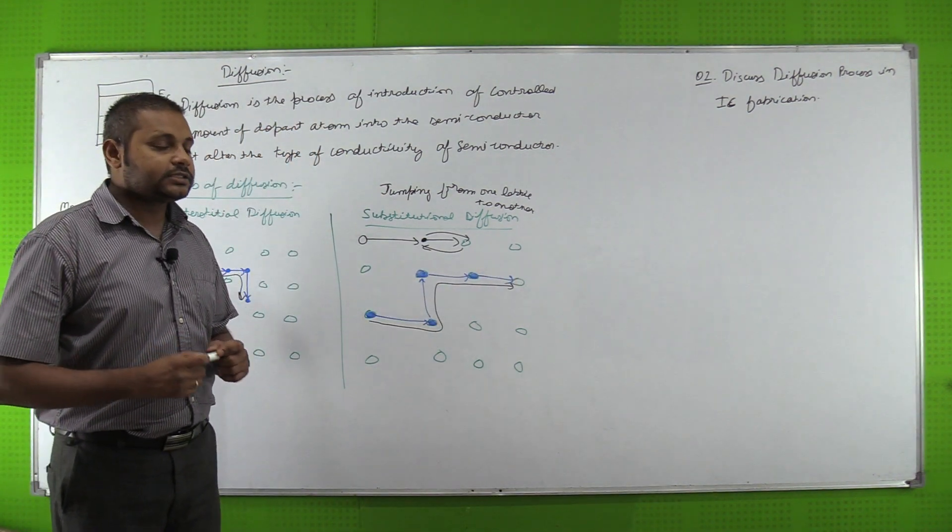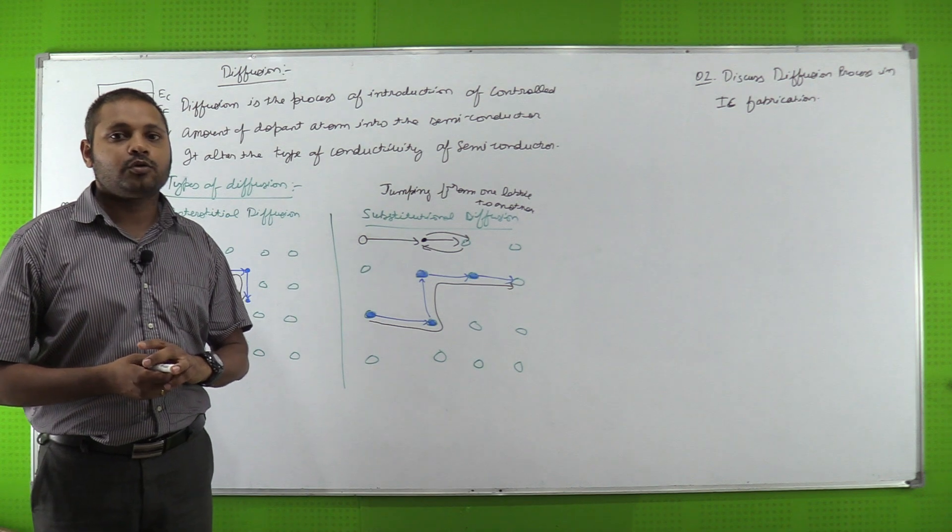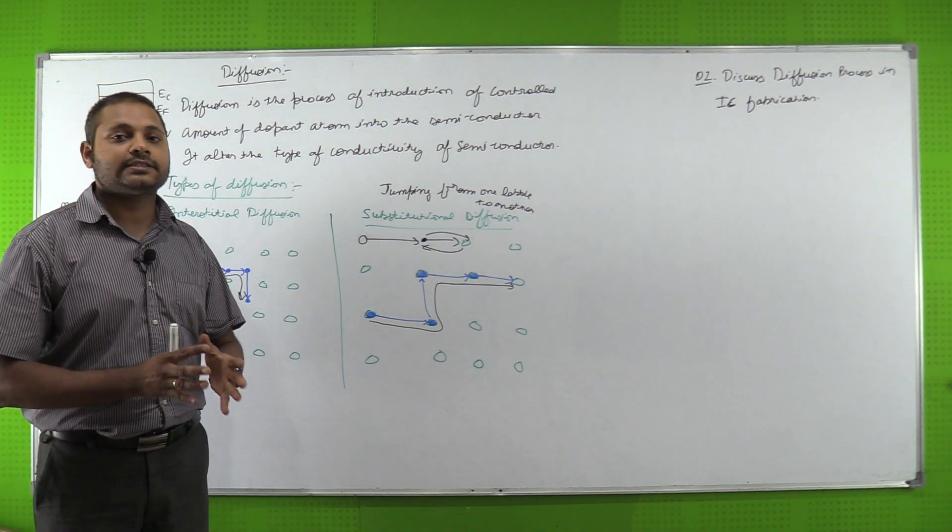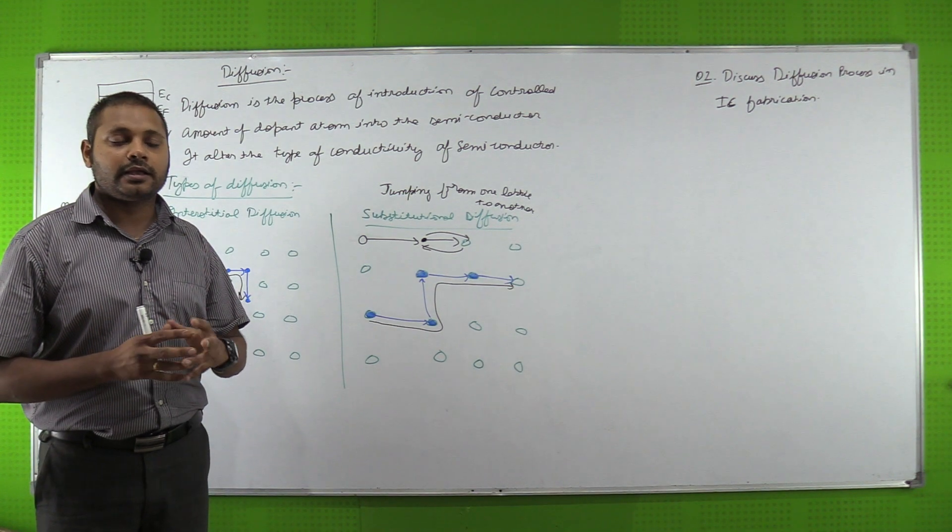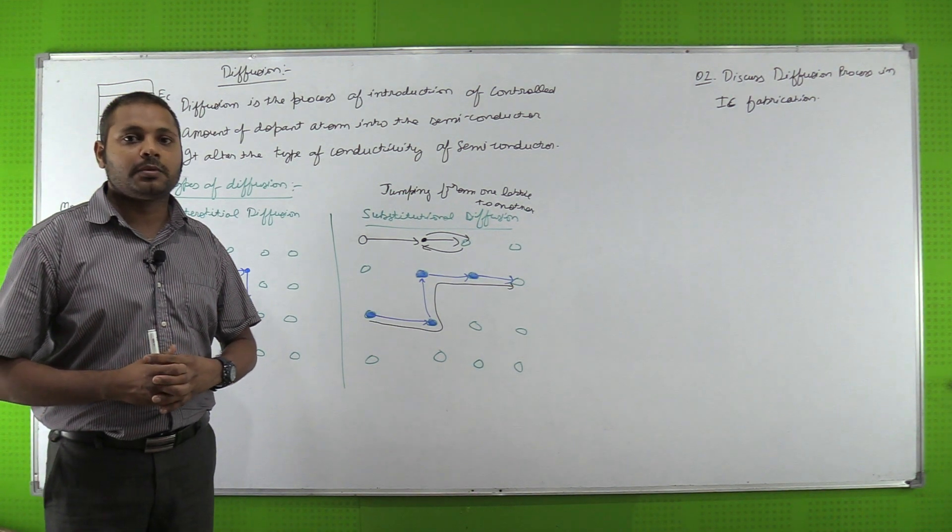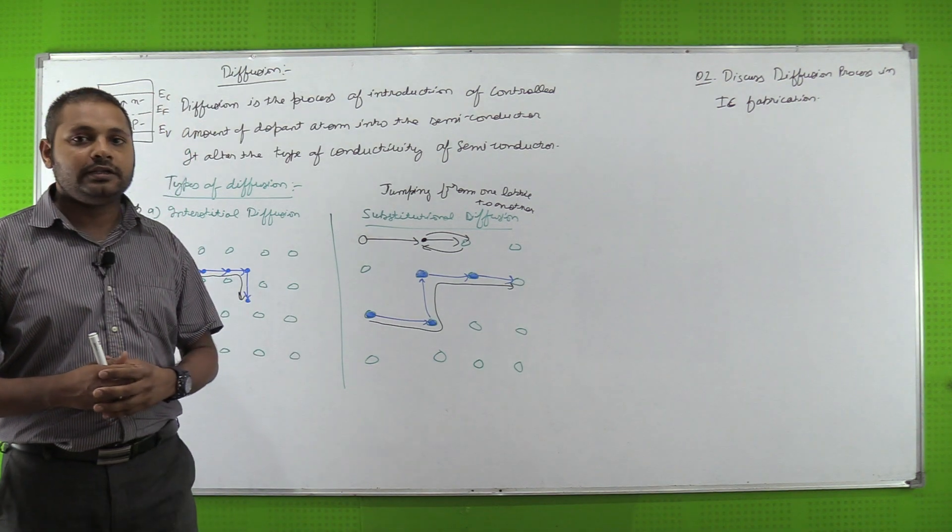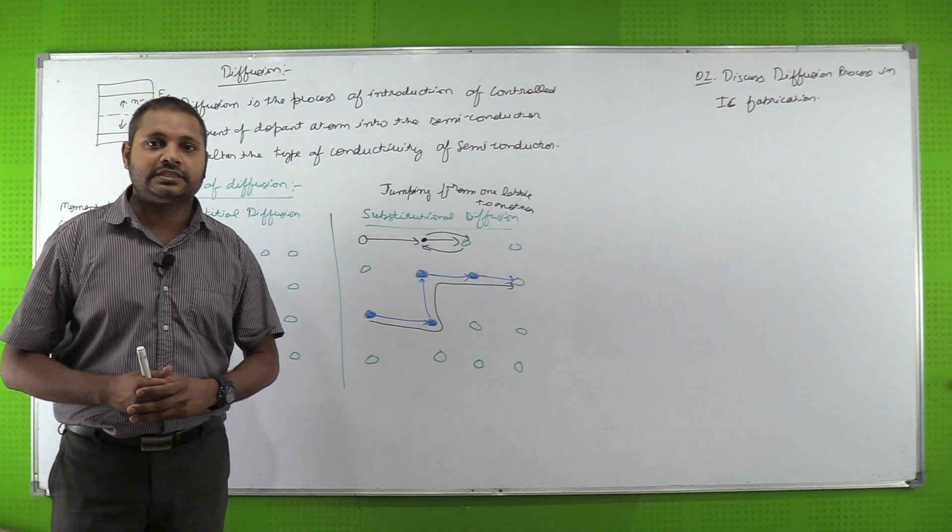So what happens in this way is diffusion. After adding dopant atom in a particular semiconductor, it gets doped. So this is all about diffusion process in IC fabrication. Thank you.